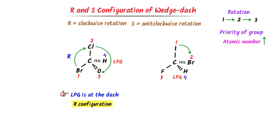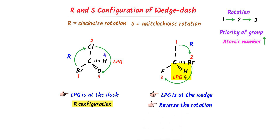Now I go from the first position to the second position, then second to the third position, and I skip the fourth position. We can see that this rotation is clockwise. According to the rule, clockwise rotation is known as R configuration, so the configuration of this compound is R. But wait — we can see that LPG or hydrogen is present at the wedge position. Remember that if LPG is present at the wedge position, reverse the direction of rotation.